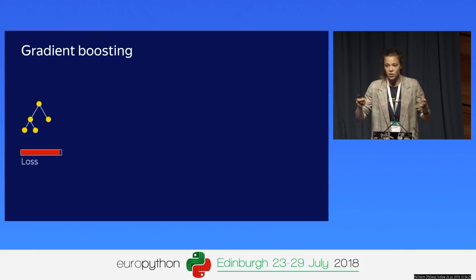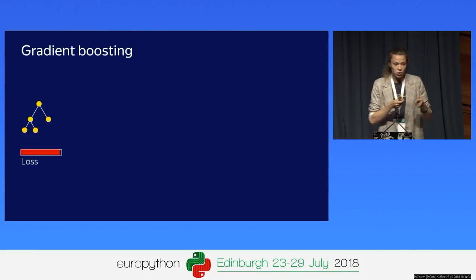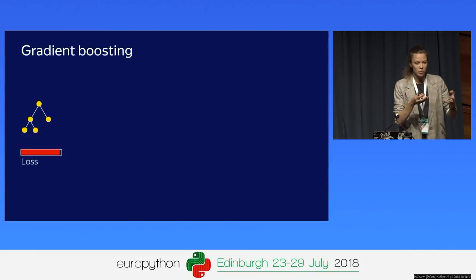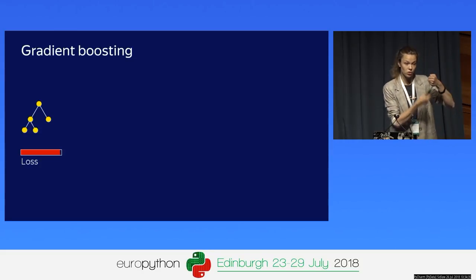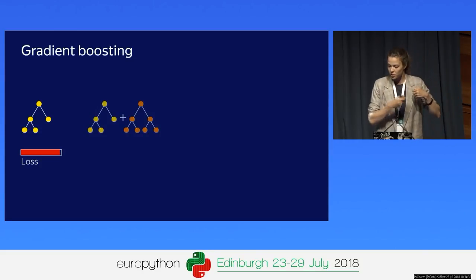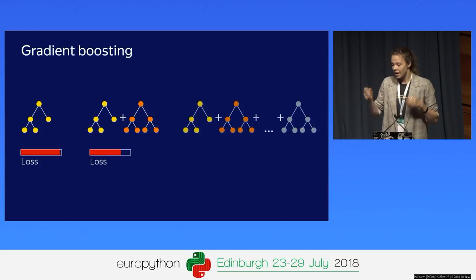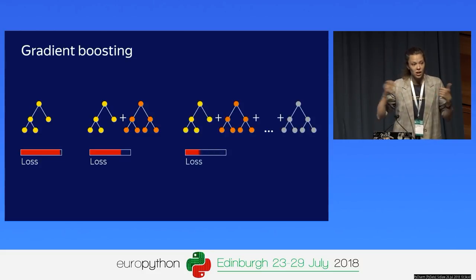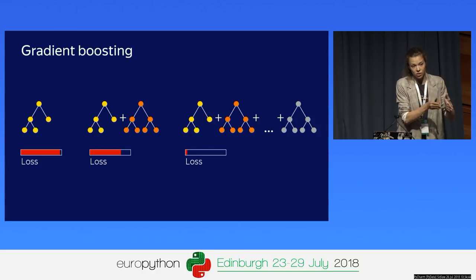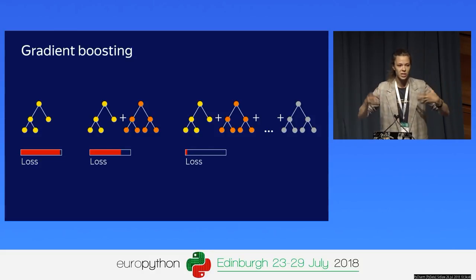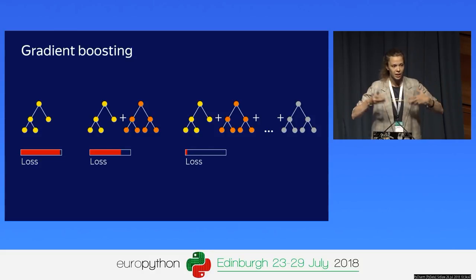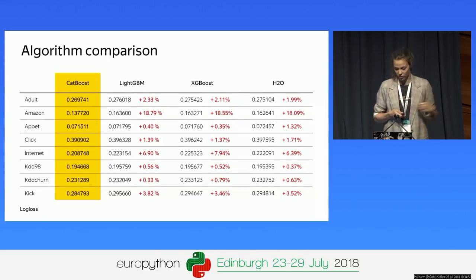Gradient boosting is an iterative algorithm. It usually builds decision trees. First it builds one decision tree so that the training error is large, then it builds another so the training error reduces, and it does that for hundreds or thousands of iterations so the training error becomes very small and you can find complicated dependencies in your data.